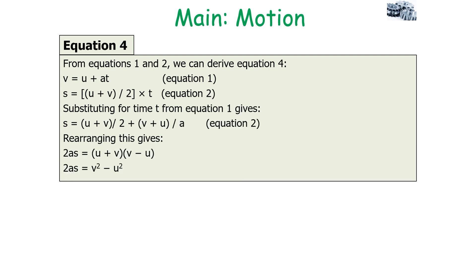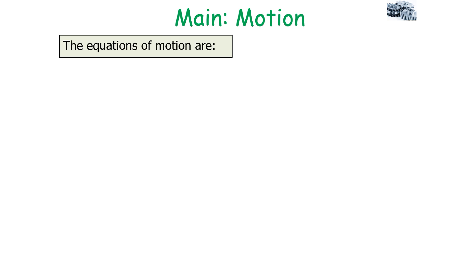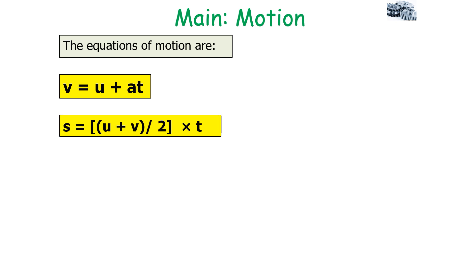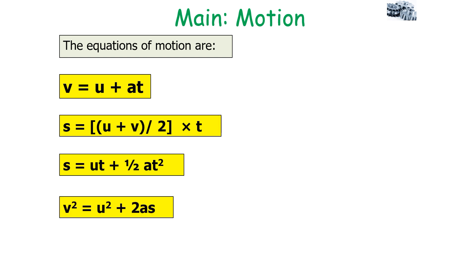The fourth equation is also derived from equations 1 and 2. We substitute time from equation 1 (V = U + AT) into equation 2 (S = (U + V)/2 × T). This gives S = (U + V)/2 × (V − U)/A, which rearranges to 2AS = (U + V)(V − U), and therefore 2AS = V² − U². Rearranging gives our fourth equation: V² = U² + 2AS. So our four equations of motion are: V = U + AT; S = (U + V)/2 × T; S = UT + ½AT²; and V² = U² + 2AS.